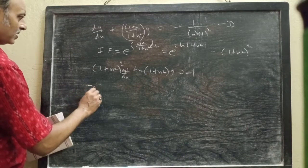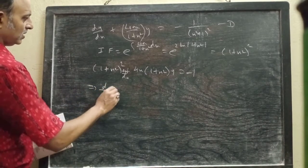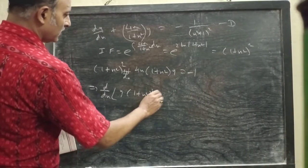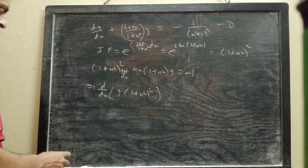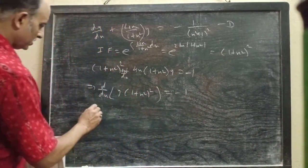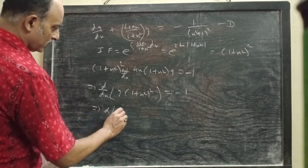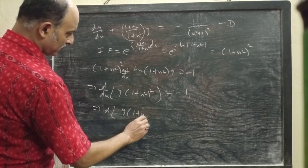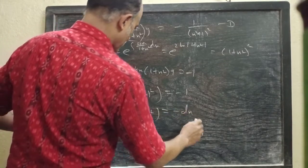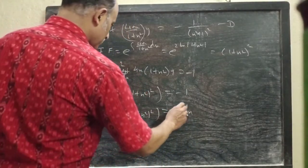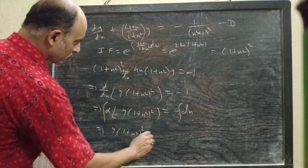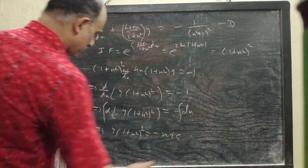The left side can be written as d/dx of [y × (1 + x²)²] equal to -1. Then we can write d of [y(1 + x²)²] = -1. Integrating both sides gives y(1 + x²)² = -x + c.